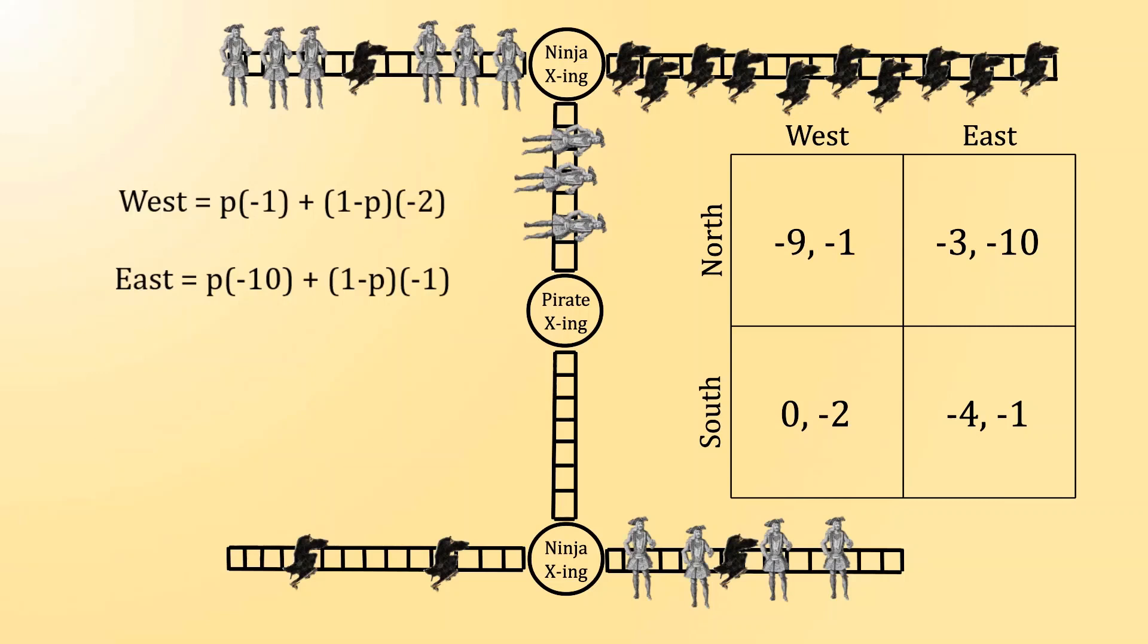If those two payoffs are equal, then there is nothing that the ninja can do to take advantage of the situation. In other words, we are curious when the payoff for west is equal to the payoff for east.